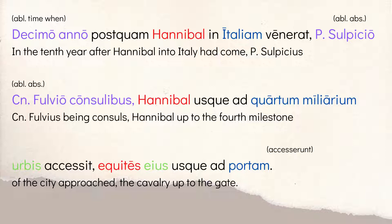Either way, the sentence tells us it's the 10th year with consuls Fulvius and Sulpicius. What does Hannibal do? He accessit — he approached, perfect tense — up to the quarto miliarium, the fourth milestone, urbis, of the city. So he's within four miles of Rome. His equites, his cavalry, approached even further, up to the gate. This is where you get that famous phrase 'Hannibal at the gates' — he sent his cavalry ahead as a sort of scouting party.